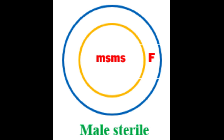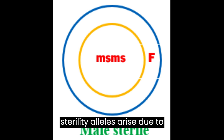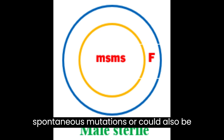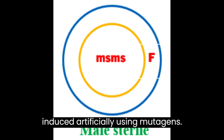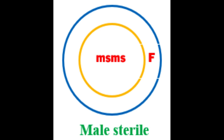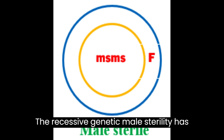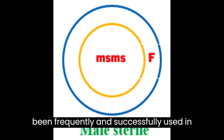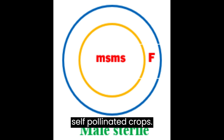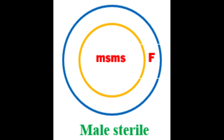Genetic male sterility alleles arise due to spontaneous mutations or can also be induced artificially using mutagens. Recessive genetic male sterility has been frequently and successfully used in self-pollinated crops.